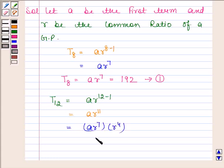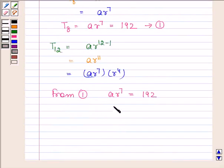From equation 1, we know that ar to the power 7 is equal to 192, and in the question we are given that common ratio, that is r, is equal to 2.